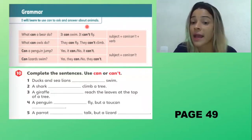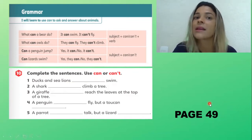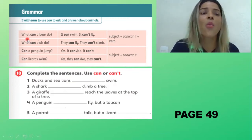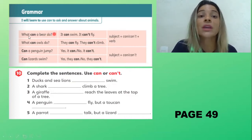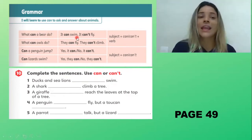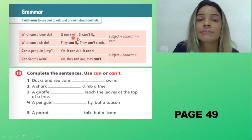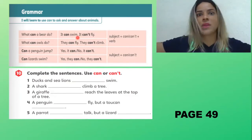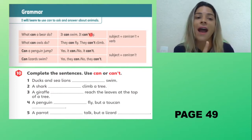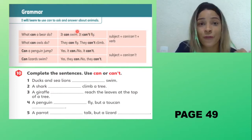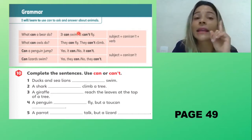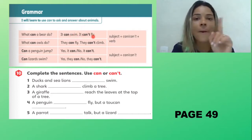Abra o livro na página 49. Let's read: 'What can a bear do?' O que um urso pode fazer? 'It can swim' — ele pode nadar. 'It can't fly' — ele não consegue voar. Então aqui nós temos a frase na afirmativa: 'It can swim' — ele pode nadar. E na negativa: 'It can't fly' — ele não pode voar.